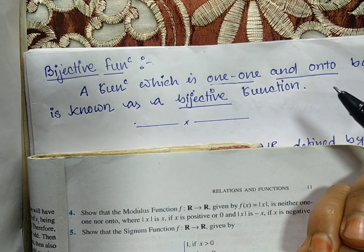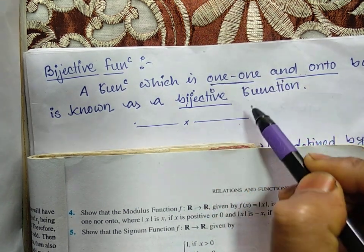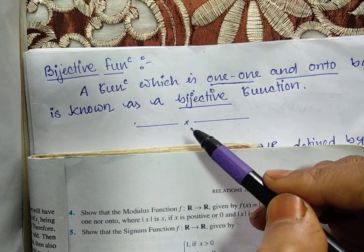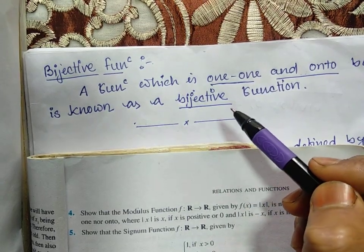A function which is one-on and onto both. Bijective means injective and surjective both. So one-on and onto both. This function is called a bijective function. So bijective means one-on and onto both.